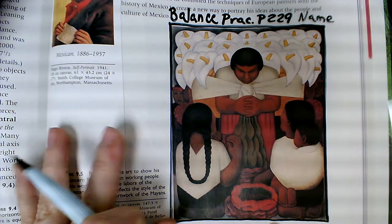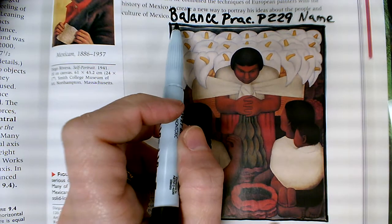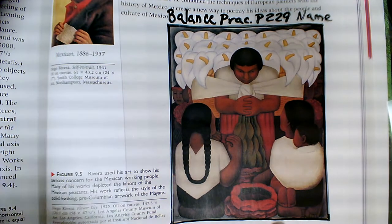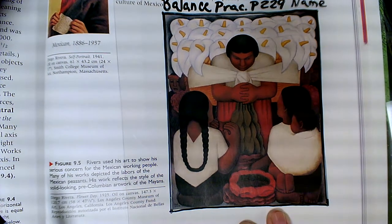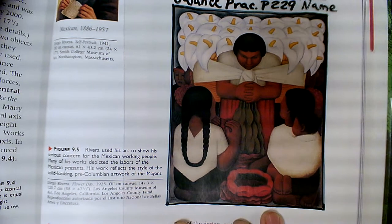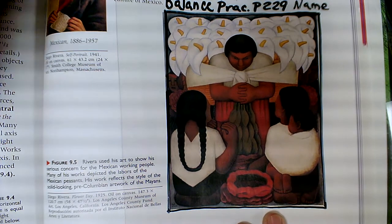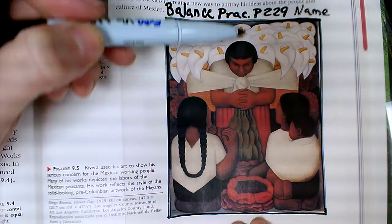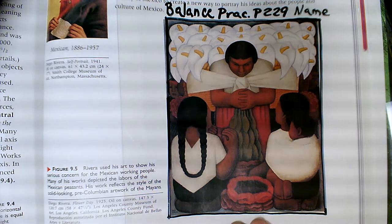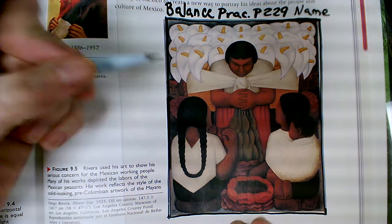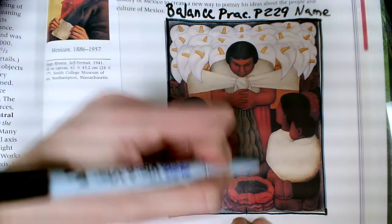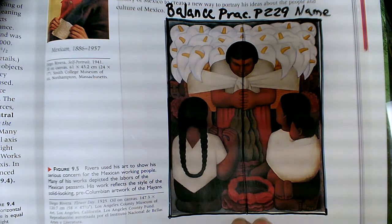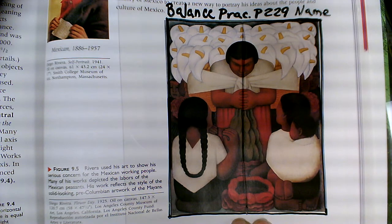Once you get your painting, start by titling it 'Balance Practice' with your page number and your name. Outline the outside border of the image so I can see exactly where to line things up for grading. Then decide if your line of symmetry should run vertically or horizontally across your painting. For this one, a nicely centered vertical line will work best.